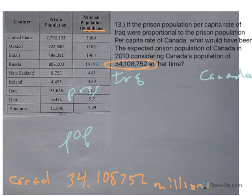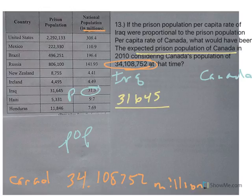For my problem here, we're trying to find out the prison population of Canada. So for Iraq, I've got 31,645 over the population of 31.3. How many in Canada if I have 34.108752 people? So my proportion, 31.3 equals... shoot, that goes on the bottom. My bad. x over 34.108752.